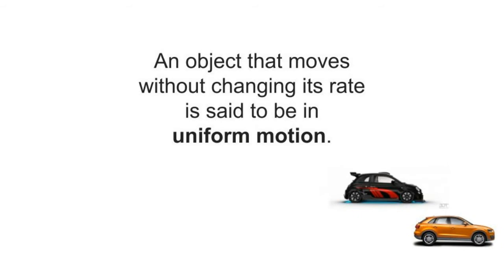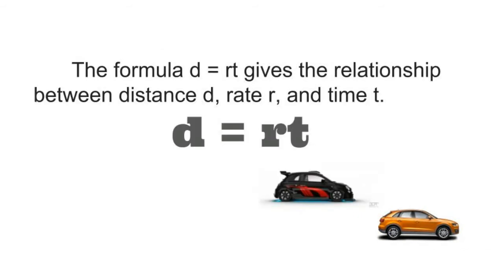An object that moves without changing its rate is said to be in uniform motion. The formula d equals rt gives the relationship between distance d, rate r, and time t. d equals r times t.